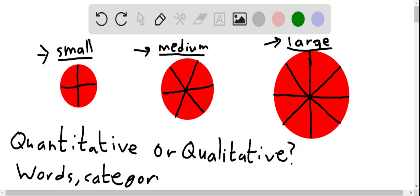And what does that mean? If we have words giving us categories, then that means we have a qualitative measurement and not a quantitative one.